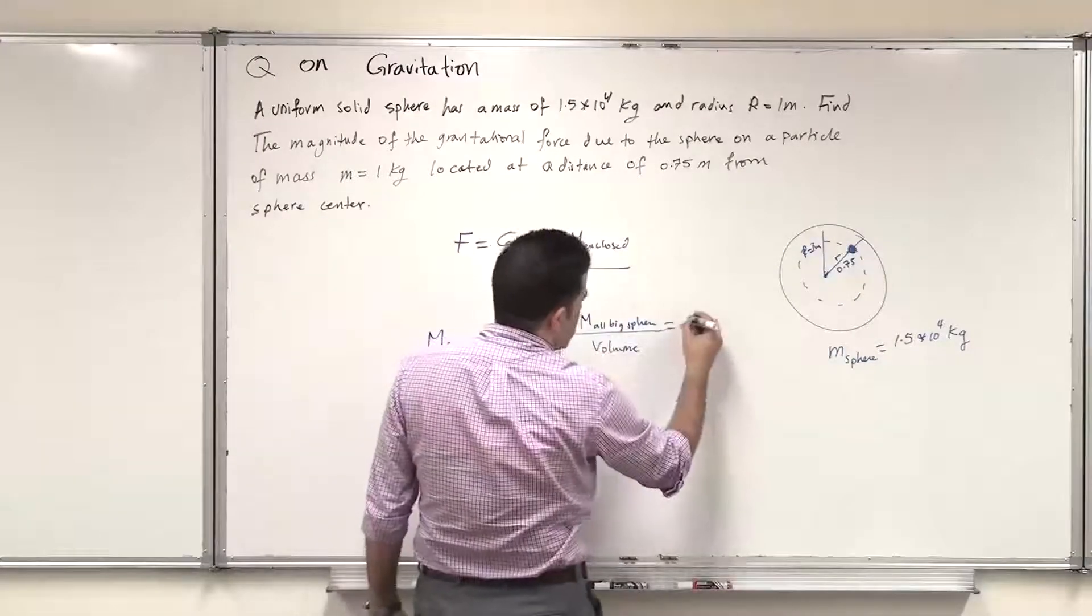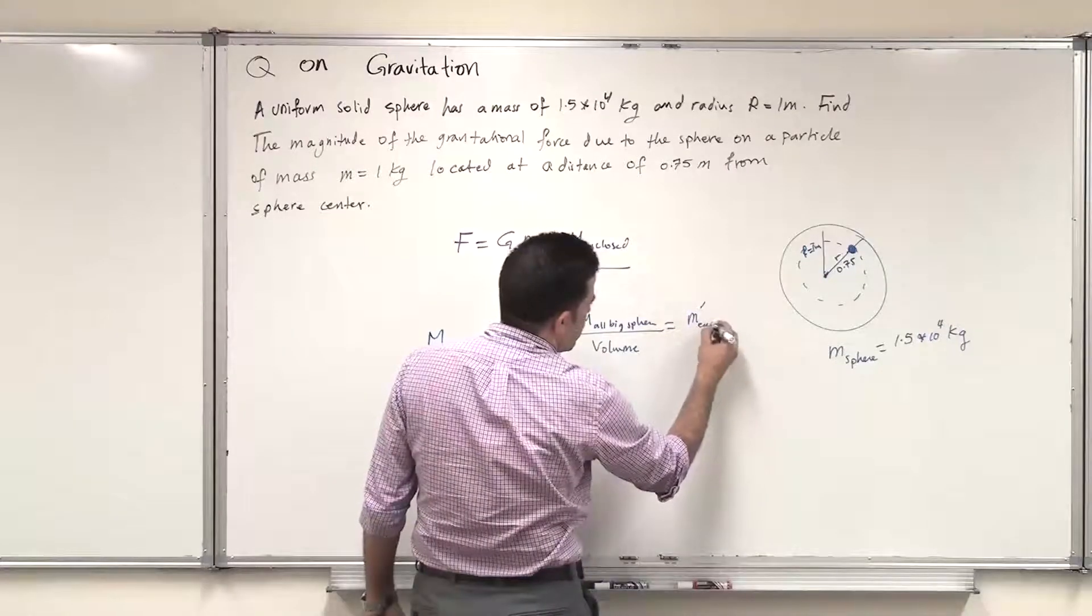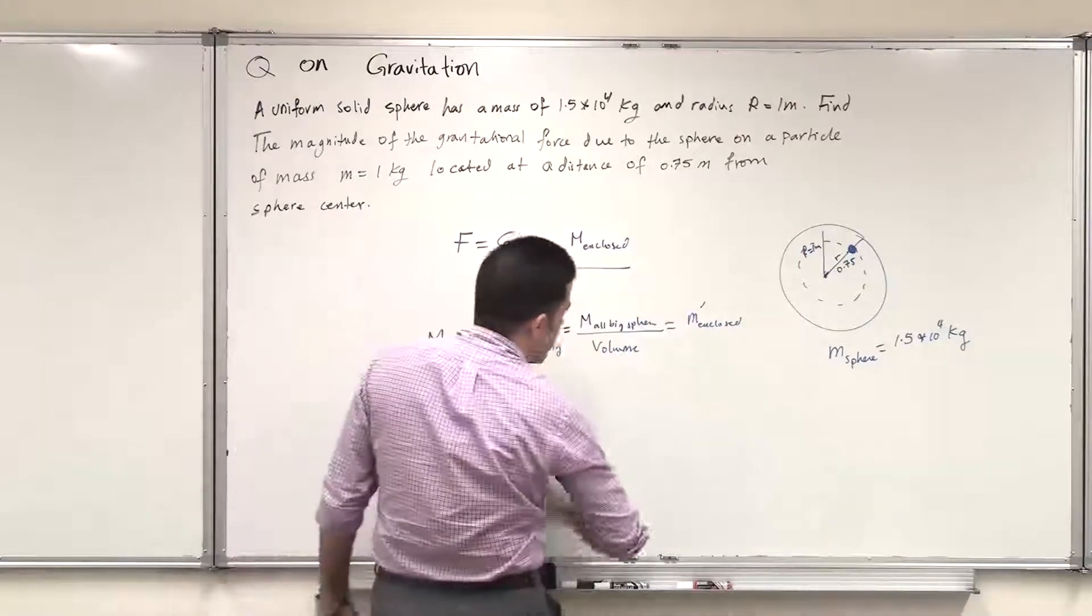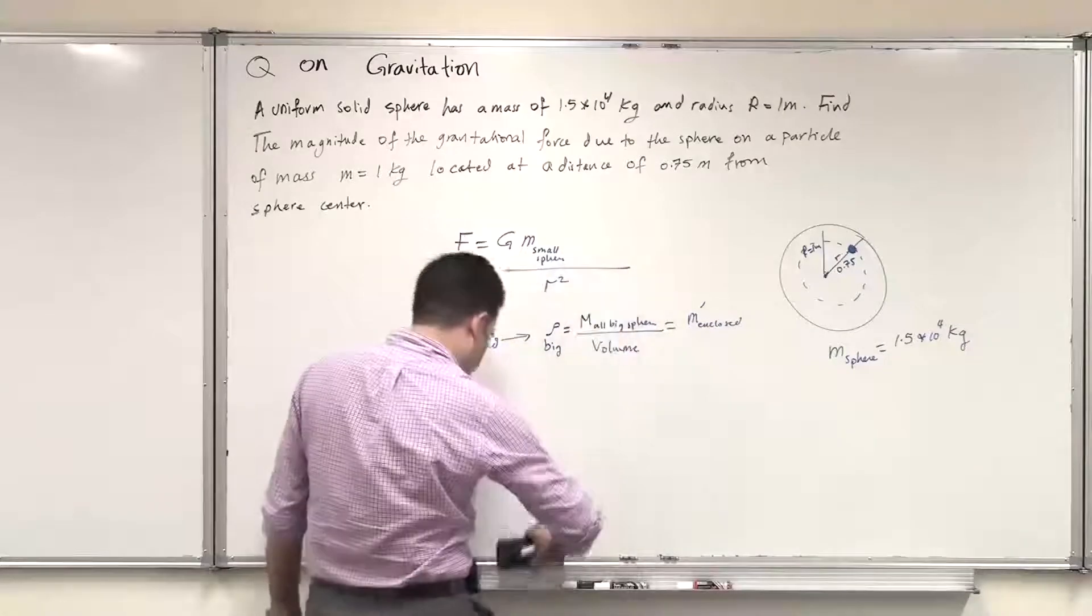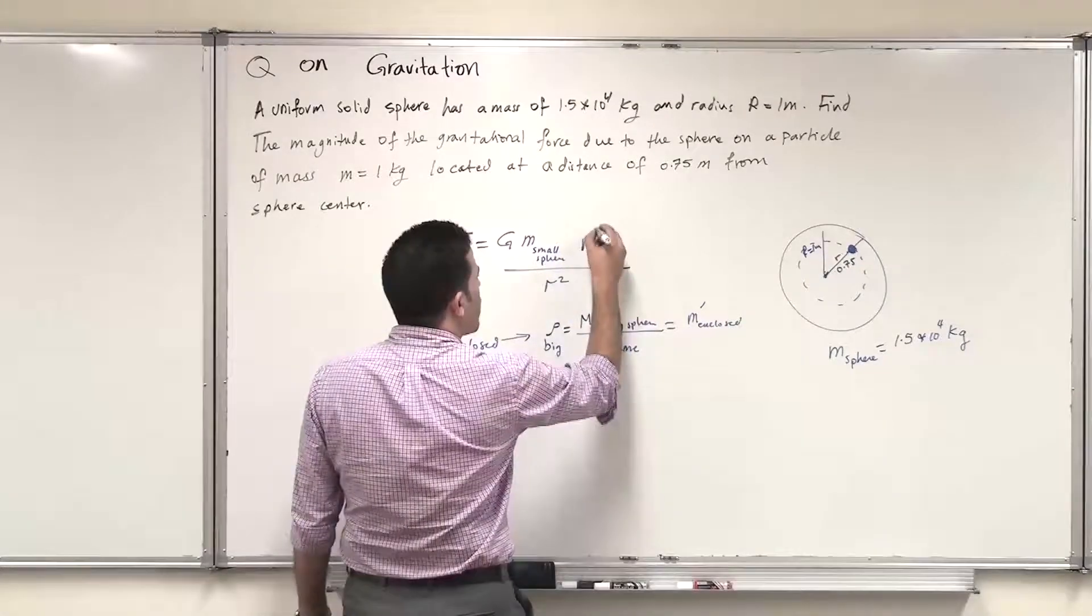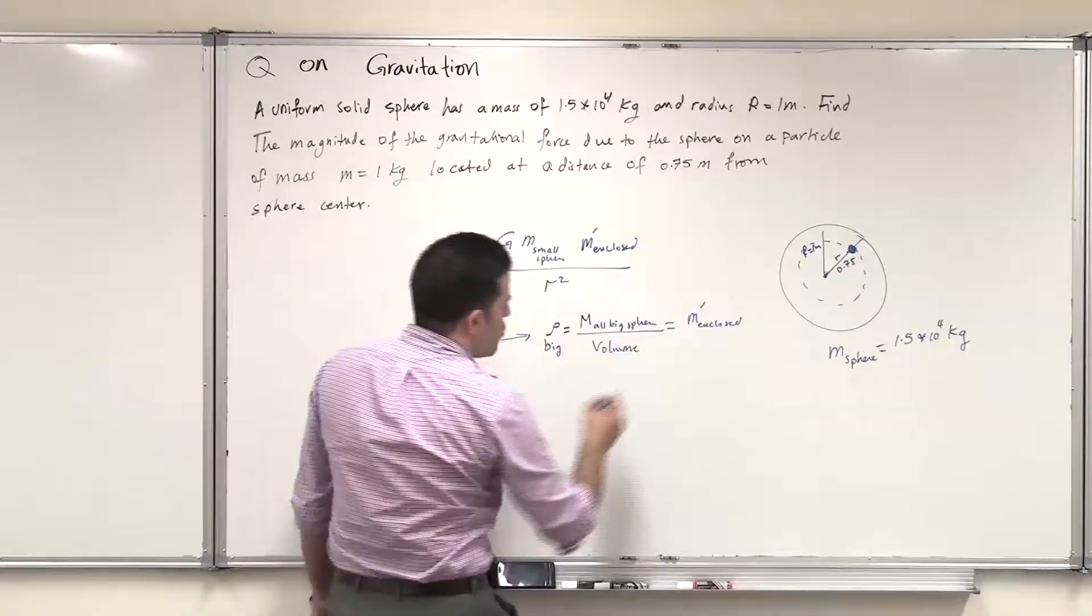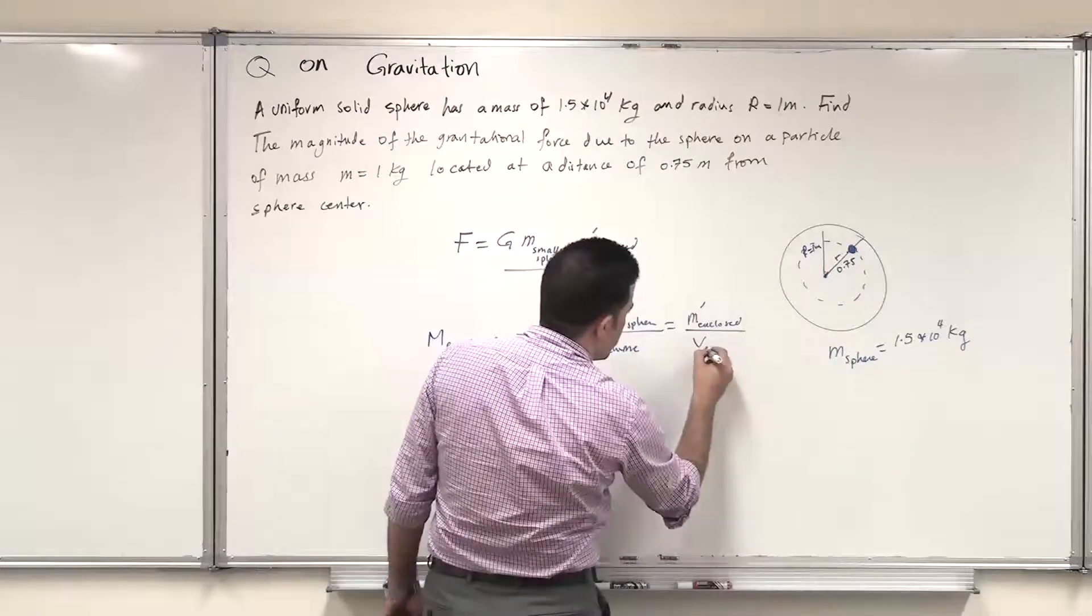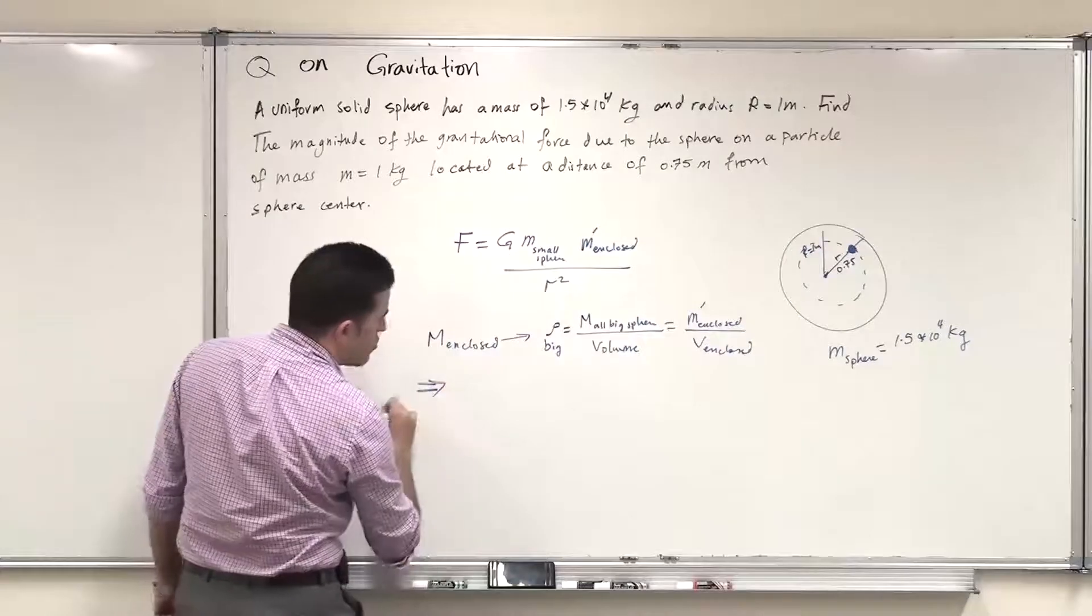So it should be mass m prime, mass enclosed. We can call it here mass enclosed m prime, divided by the volume enclosed. Now we can do simple substitution.